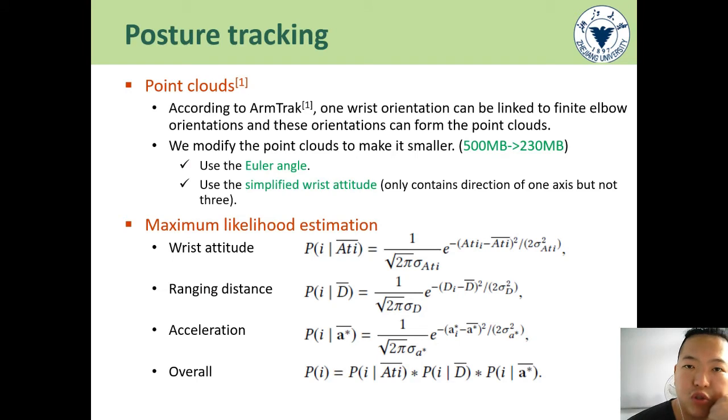Referring to ArmTrck, we generate the possible arm postures using point clouds. The point clouds can be regarded as a lookup table where one wrist orientation is linked with many elbow orientations. We do simplifications on point clouds to make them occupy smaller RAM. At last, the positioning module serves the limb postures with maximum likelihood according to observed wrist attitude, distance, and acceleration.